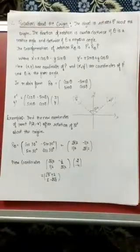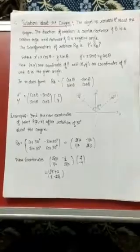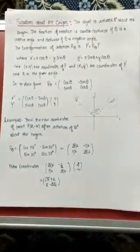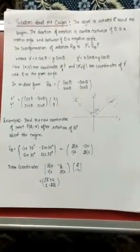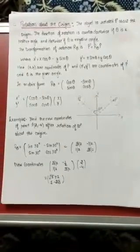Here the object is rotated 30 degrees about the origin. The direction of rotation will be counterclockwise if the angle theta is positive, and clockwise if the angle theta is negative.